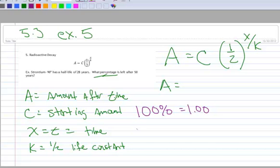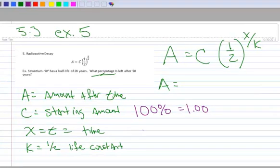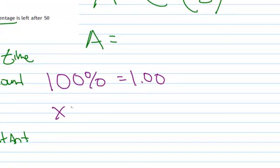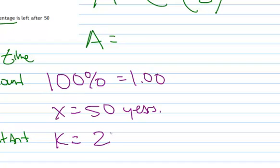It doesn't really matter. And in this problem, we know that time is going to be 50 years, so X is going to be 50, and that's years. And the half-life constant, well, in this case, strontium-90 has a half-life of 28 years.